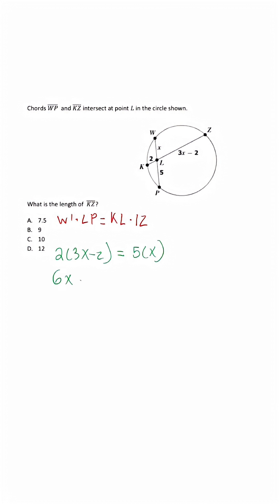So we have 6x minus 4 is equal to 5x. Once we simplify, we're going to have negative 4 is equal to negative x. So I know x is going to be equal to positive 4.